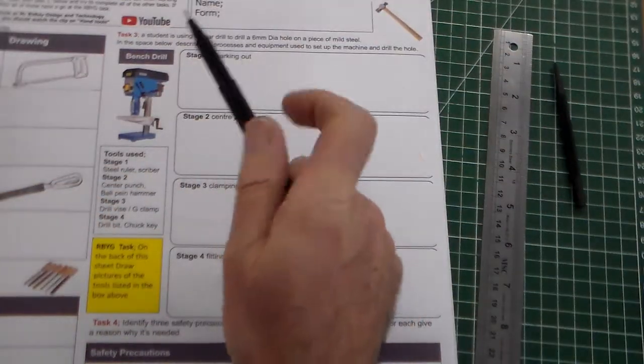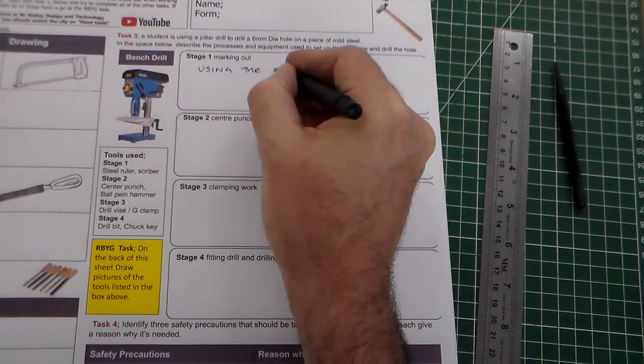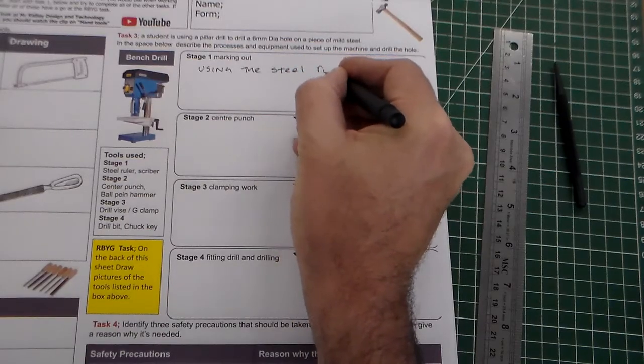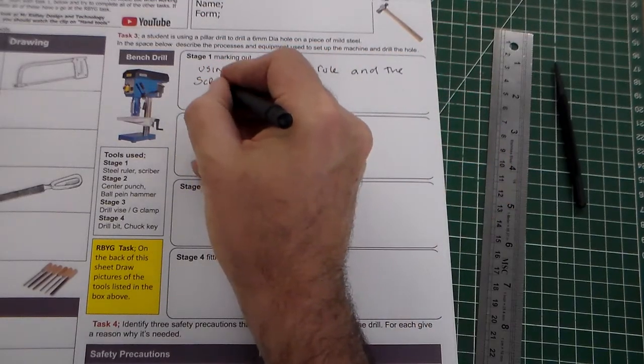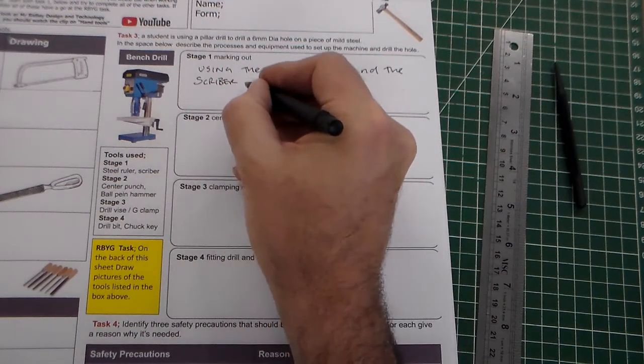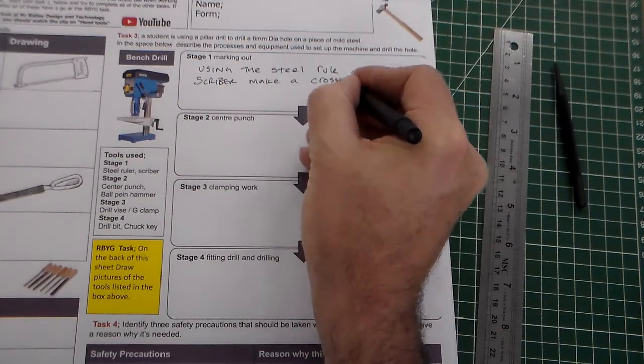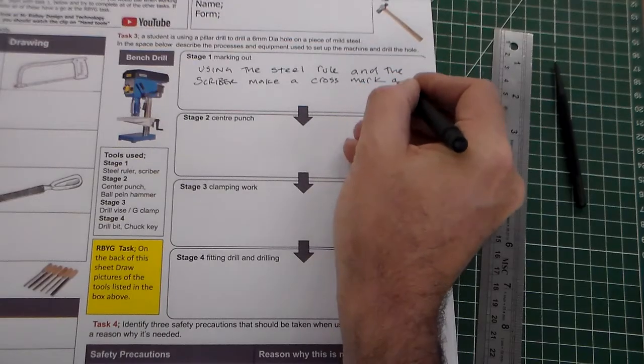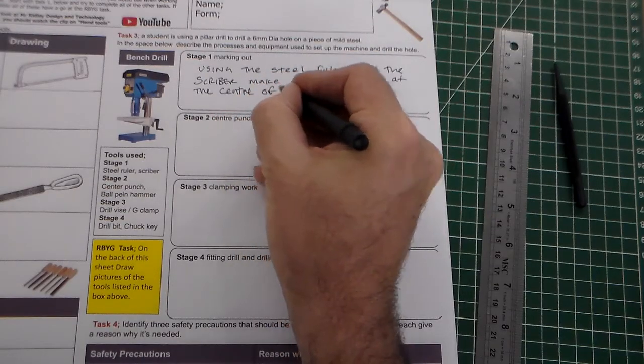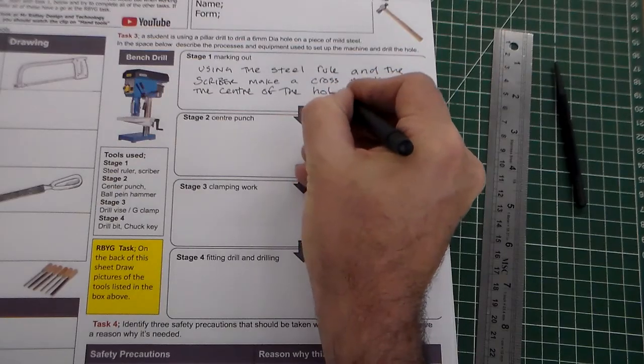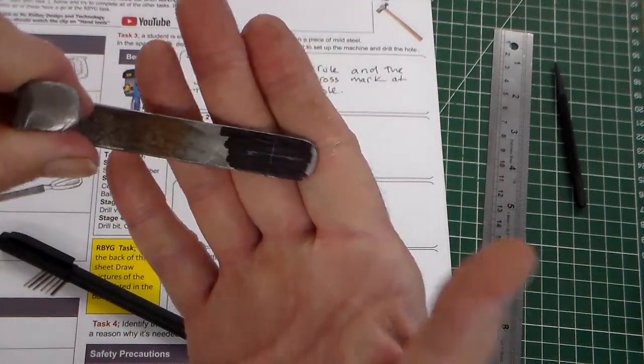So, we can write using the steel ruler and the scriber, make a cross mark at the center of the hole. Is that right, or where the hole is. So, we can see there, as I say, we've made that cross mark there, where we want the center of the hole.